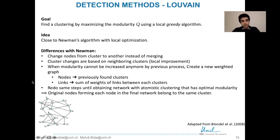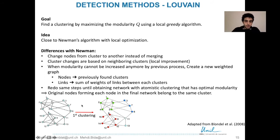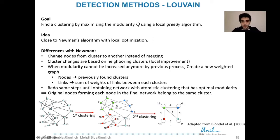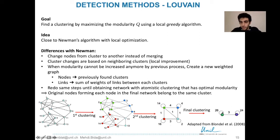Here is an example. We have this graph, and the first step gives us a clustering. This is then transformed into a graph with four nodes, since we have four clusters, with edge weights equal to the sum of the edges between clusters. This is clustered again, and we end up with a final result of two nodes each in its own cluster — the green cluster and the purple cluster.